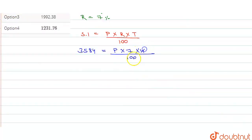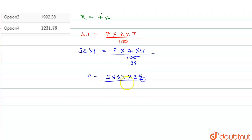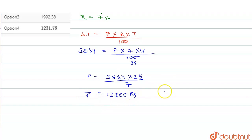यहां से solve करते हैं। 4 ÷ 100 = 1/25, तो यहां से principal = 3584 × 25 ÷ 7। Calculate करने पर principal = 12,800 रुपये। यह हमारा principal amount हो गया।